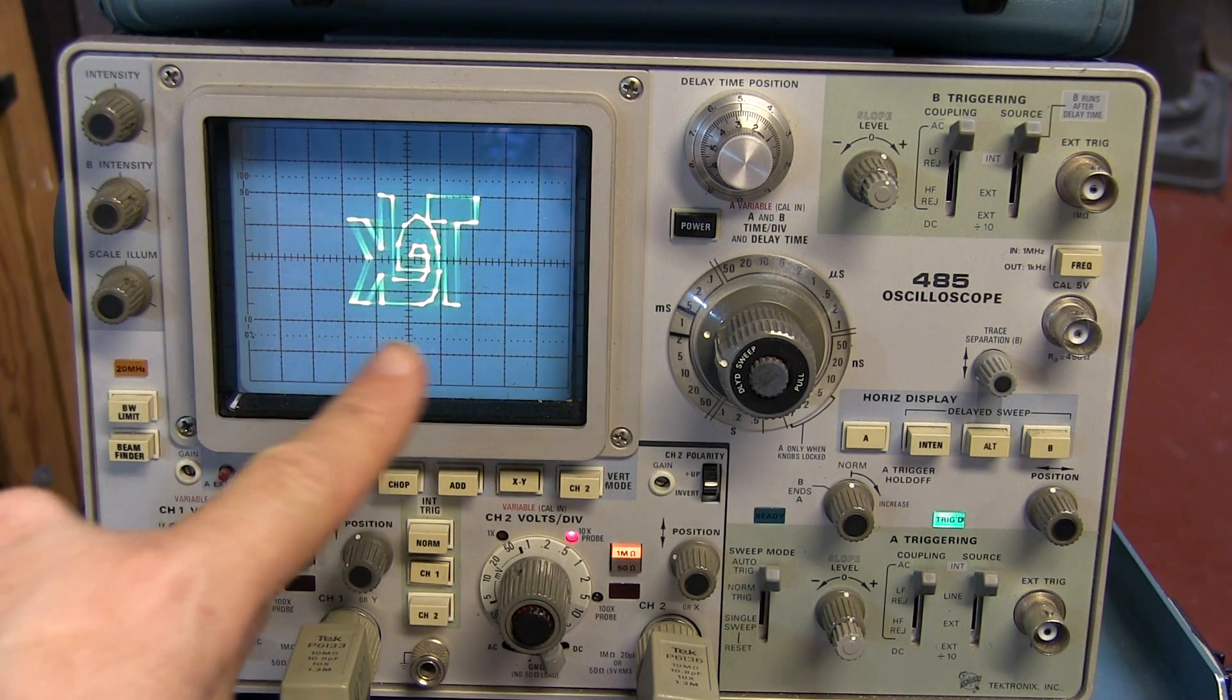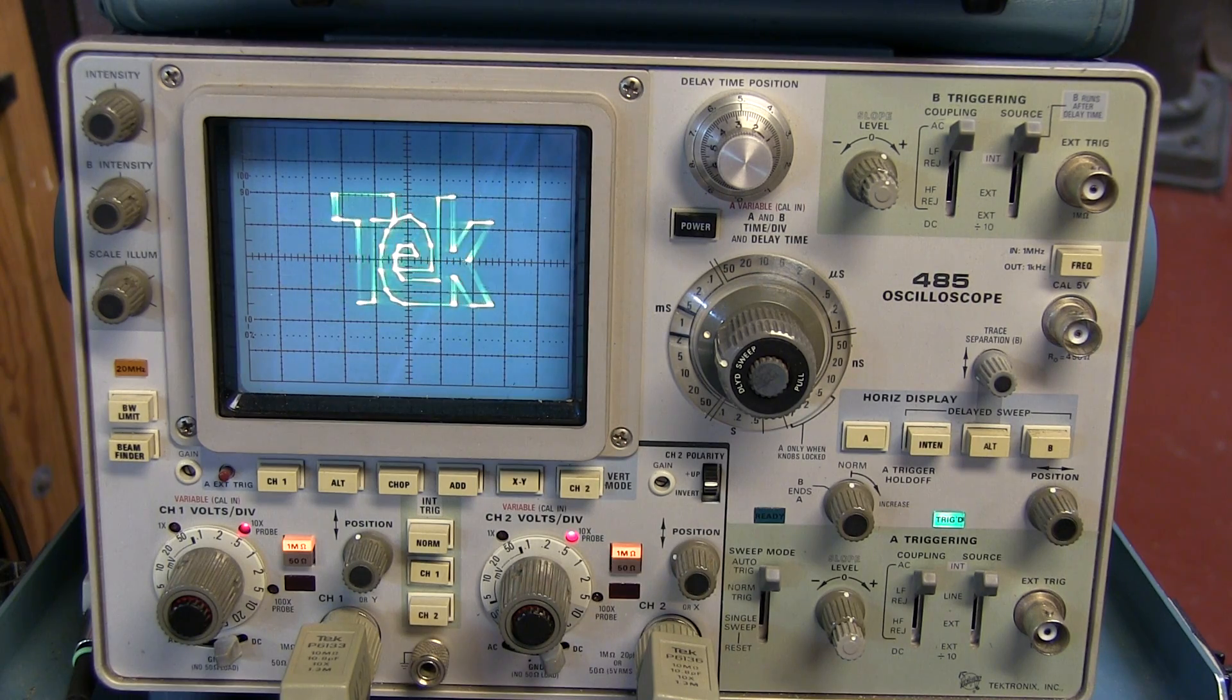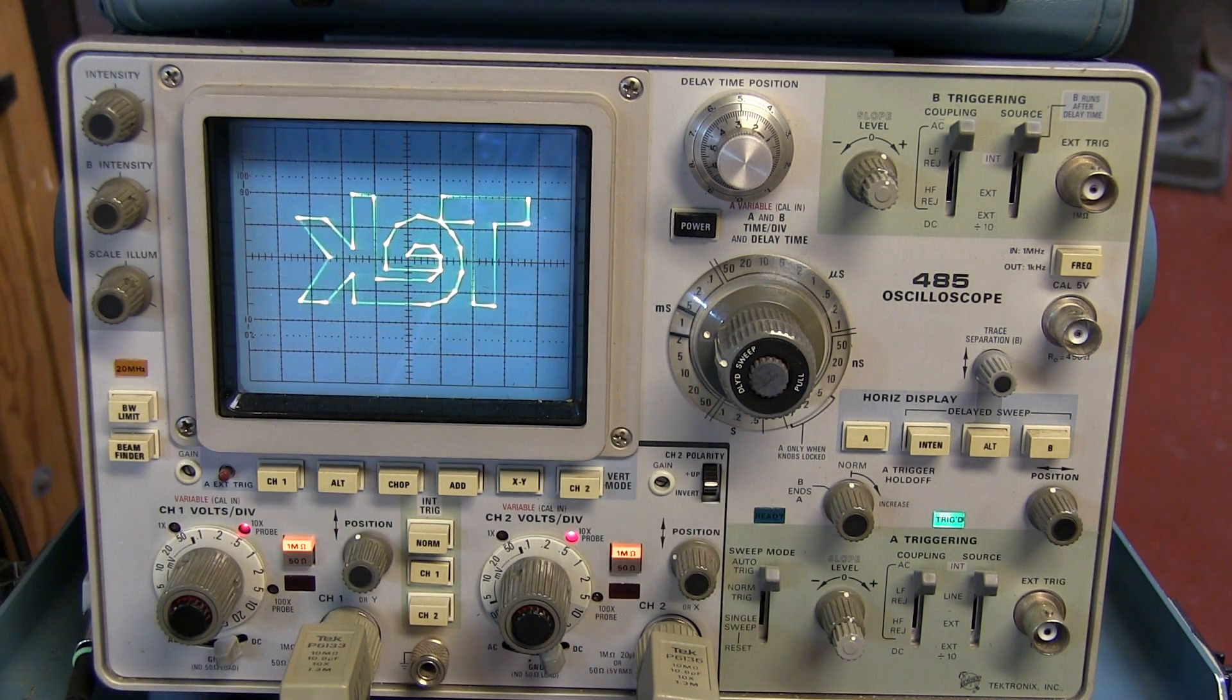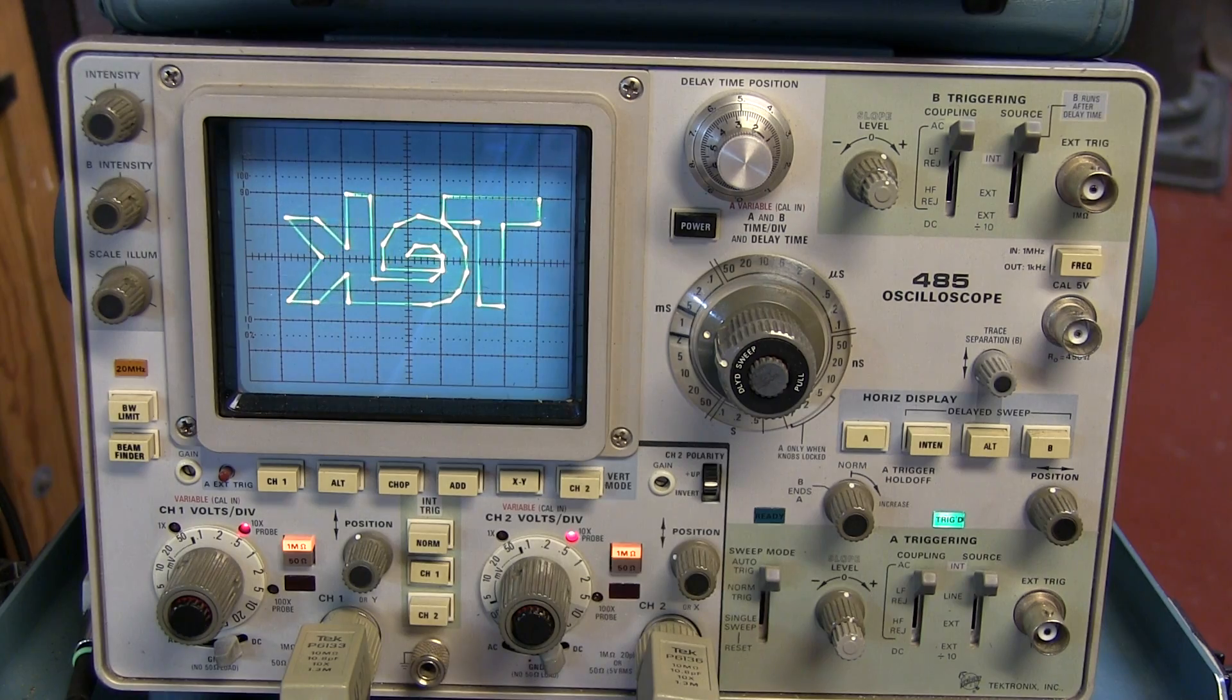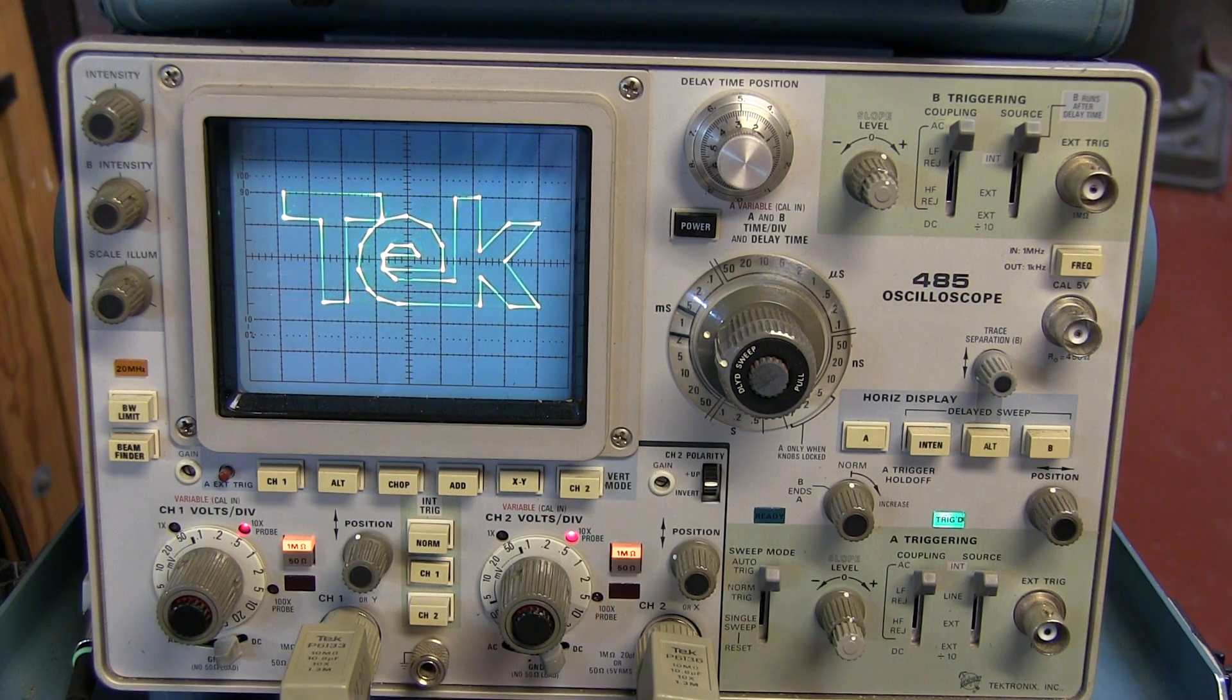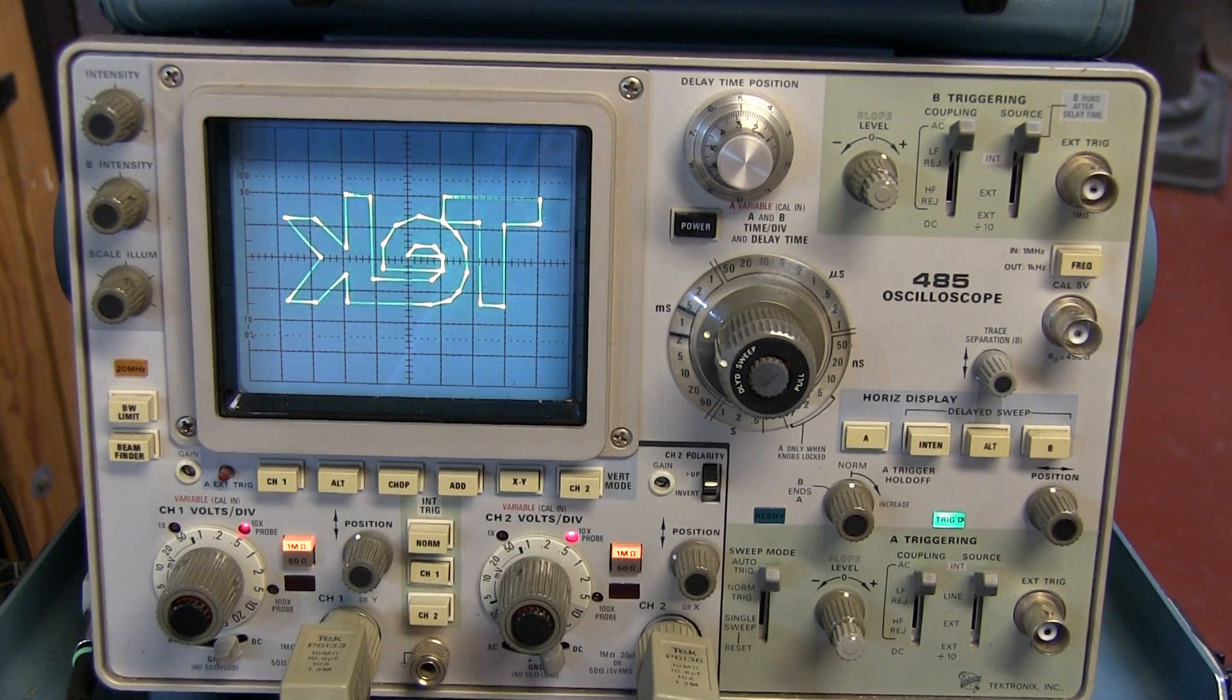So what we're looking at is just the old tech logo and the old tech font from about the mid-1980s being spun around on the scope. And it's being generated by drawing in X and Y the coordinates for the logo. And that's all being generated by an Arduino.